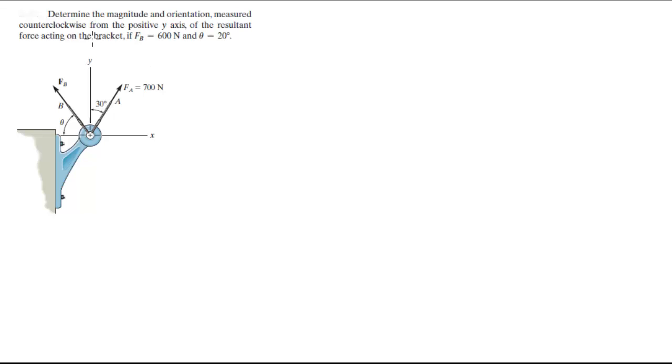Alright guys, now we're going to do this problem that says: Determine the magnitude and orientation measured counterclockwise from the positive y-axis of the resultant force acting on the bracket if F is 600 N and this angle is 20 degrees. So this is 600 and this angle is 20 degrees.